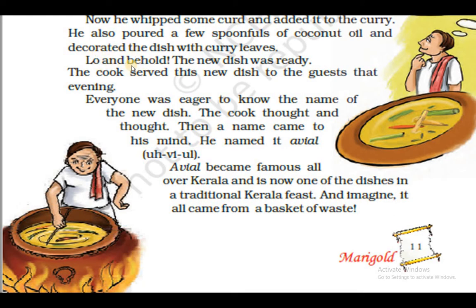Lo and behold — dekhkar lag raha tha ki kya achambhit karne waali cheez hai — the new dish was ready. The cook served this new dish to the guests that evening — us bawarchi ne dish ko sabhi mehmaanon ko serve kiya. Everyone was eager to know the name of the new dish — har koi us dish ka naam jaanne ka ichhuk tha — agar kisi cheez ko jaanne ki jigyasa. The cook thought and thought — bawarchi sochta raha, sochta raha. Then a name came to his mind — uske baad uske dimaak mein ek naam aaya. He named it avial — A-V-I-A-L — usnei is dish ka naam avial rakha.